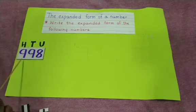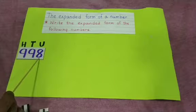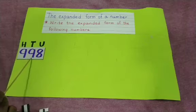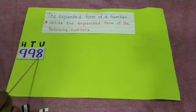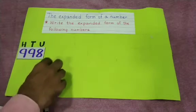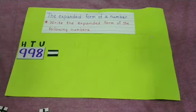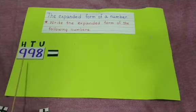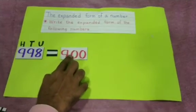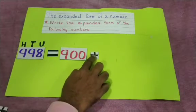In this number, 998 means 9 hundreds, 9 tens and 8 units. We have to write how many hundreds are there. Here 900 is there, so you have to show 900. You have to write 900. After that you have to put the plus sign.